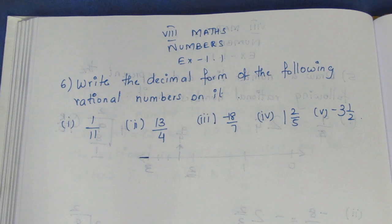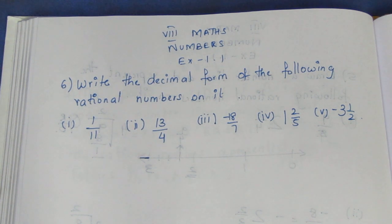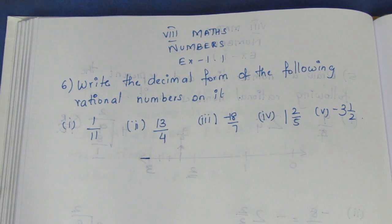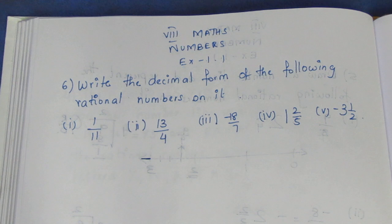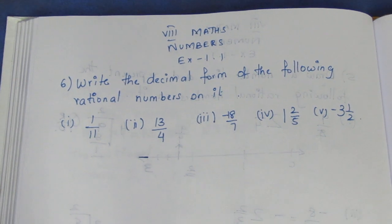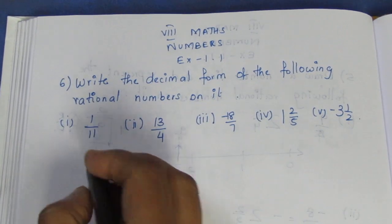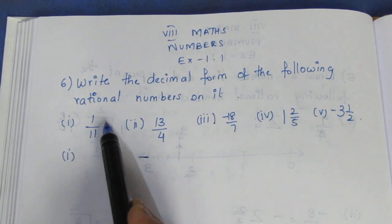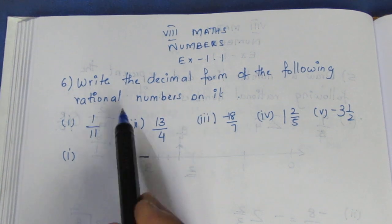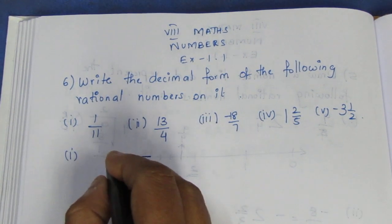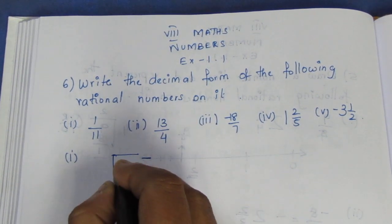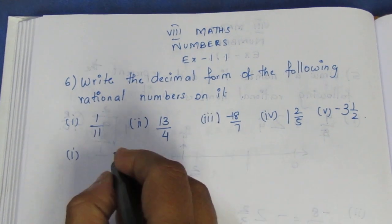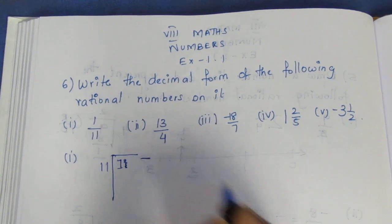Write the decimal form of the following rational numbers. Decimal form uses a decimal point. If you have a point, you can divide it. So let's go to ordinary division. The sum is division — divide the numerator by the denominator. Go ahead and divide the numerator and denominator.